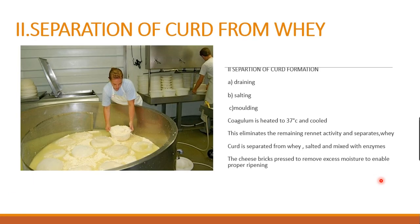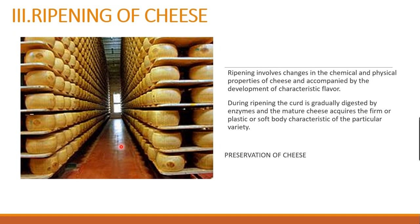The coagulum is heated at 37 degrees centigrade and cooled, which eliminates remaining rennet activity and separates the watery fluid called whey. The curd is separated from the whey, then salted and mixed with enzymes. The bricks are pressed firmly to remove excess moisture and enable proper ripening.